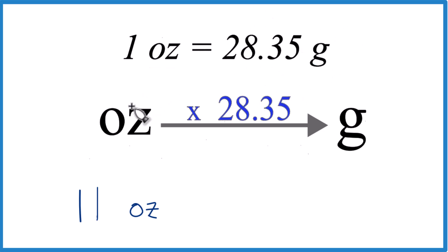So we're going from ounces to grams. We're going to multiply by 28.35. If we're going back, we could just divide. So let's do that.